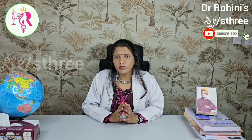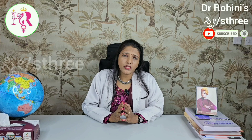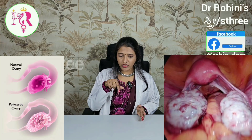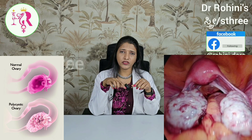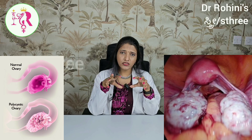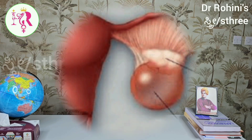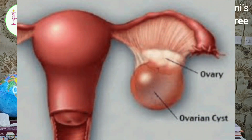One important thing to clarify is that polycystic ovary and ovarian cyst are different. Many patients who are diagnosed with PCOD come saying the doctor told them they have an ovarian cyst, but polycystic ovary is different from ovarian cyst. The necklace pattern arrangement of follicles is called polycystic ovary — there is no separate cyst. In an ovarian cyst, you see a separate growth which may be three, four, five, or even ten centimeters, and that is called an ovarian cyst.